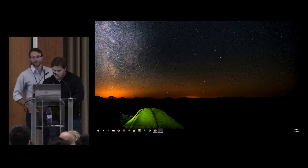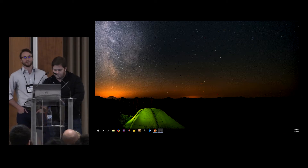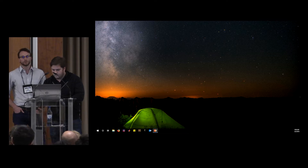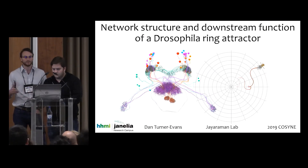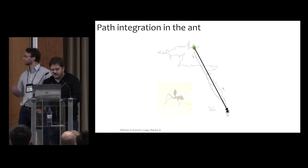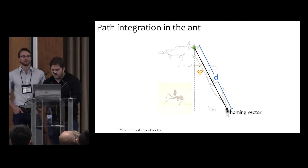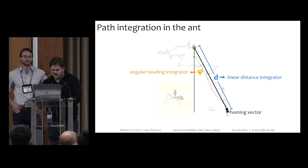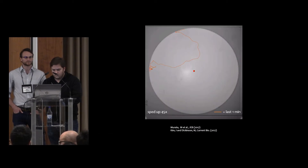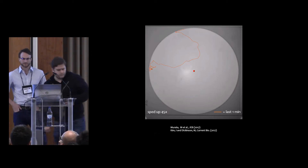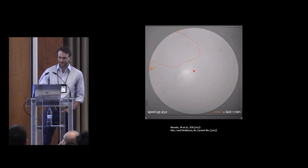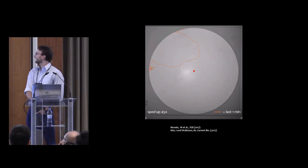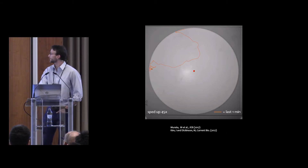Theories from over a couple of decades ago suggested that you could store this type of information in two different ways. You could store the angular heading in an angular integrator, much like the head direction cells we heard about earlier, and you could store the distance in some kind of linear distance integrator. So path integration would be stored with an angular heading integrator and a linear distance integrator.